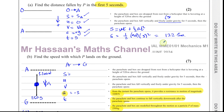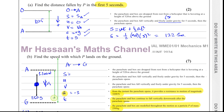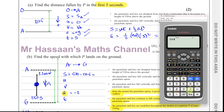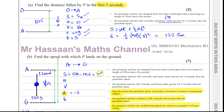The object has already fallen 122.5 meters from O to A. The total distance to fall is 520 meters, so the remaining distance from A to the ground is 520 − 122.5 = 397.5 meters.